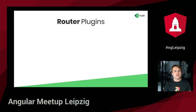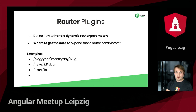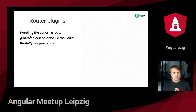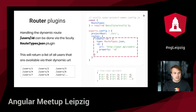Router plugins are used to instruct Scully how to handle dynamic route parameters in a specific route configuration. They can be used to fetch the data required to expand those route parameters and generate a full list of possible URLs. Typical examples are a blog or news detail page, or a user detail page. In a basic example, the dynamic property `id` will be expanded using data returned by a JSON source. The only thing we need to do is configure the route in the Scully config file, define the type, and how to expand the property `id`. This returns a list of all users available via their own dynamic URL.